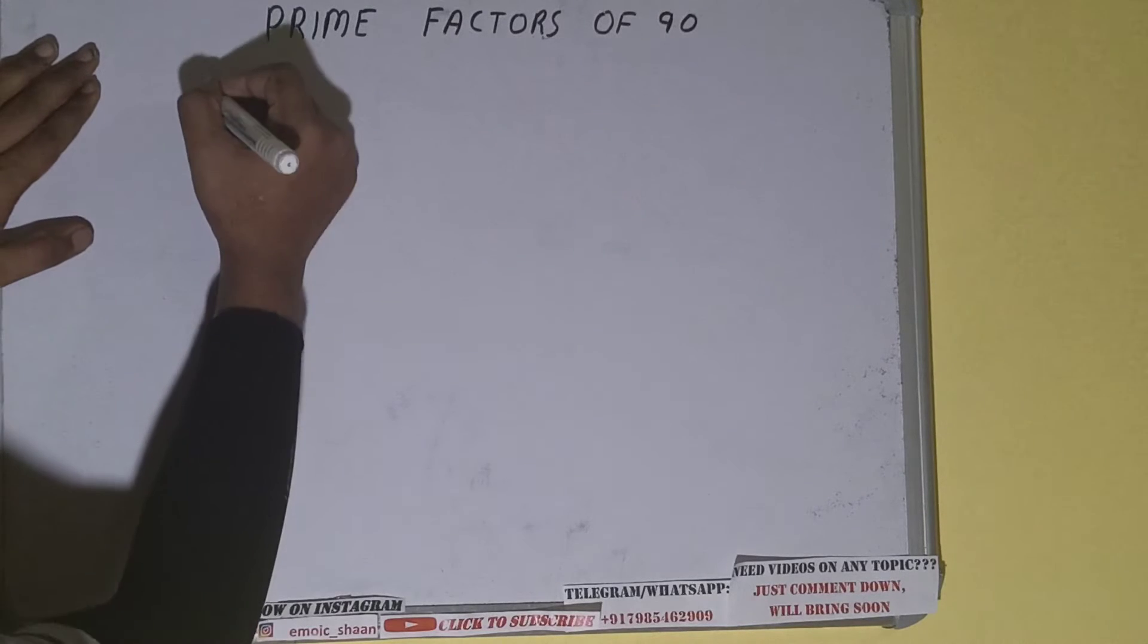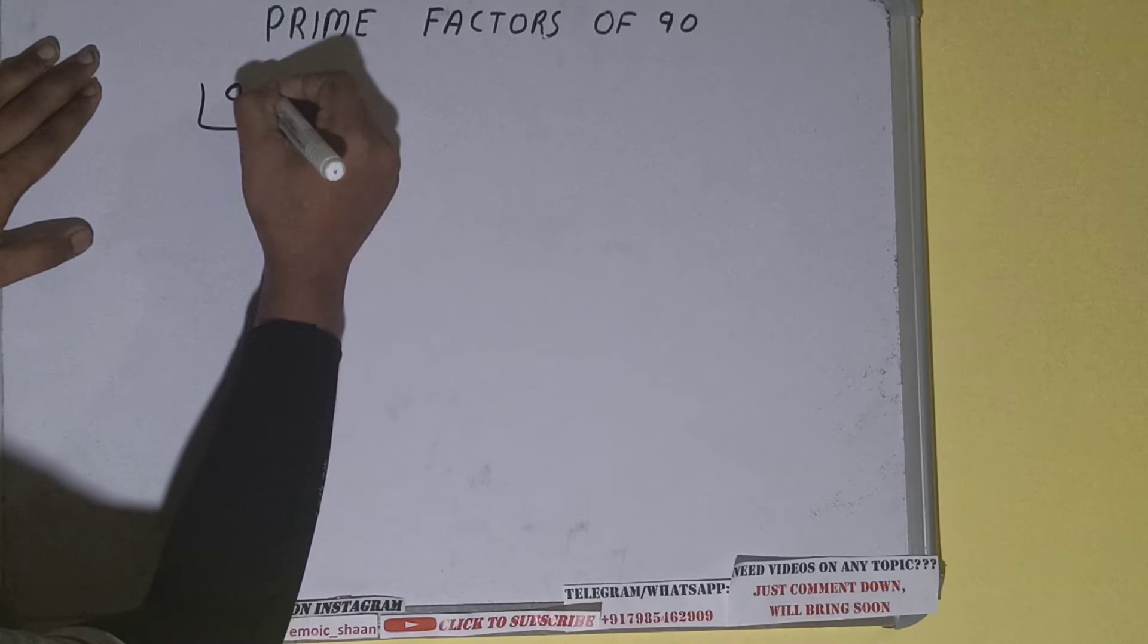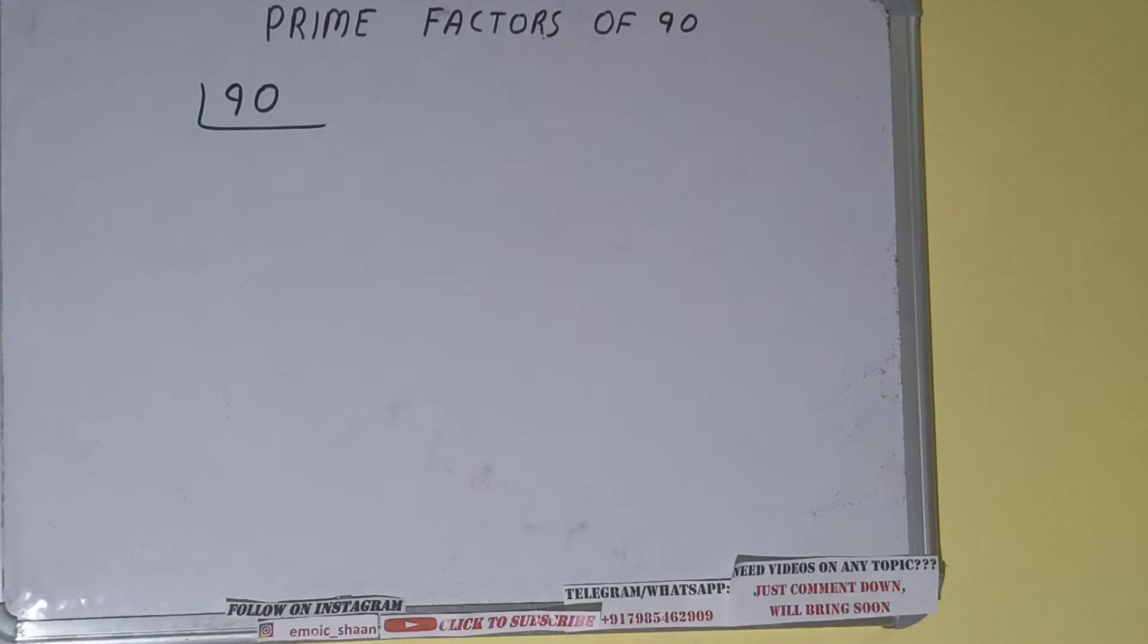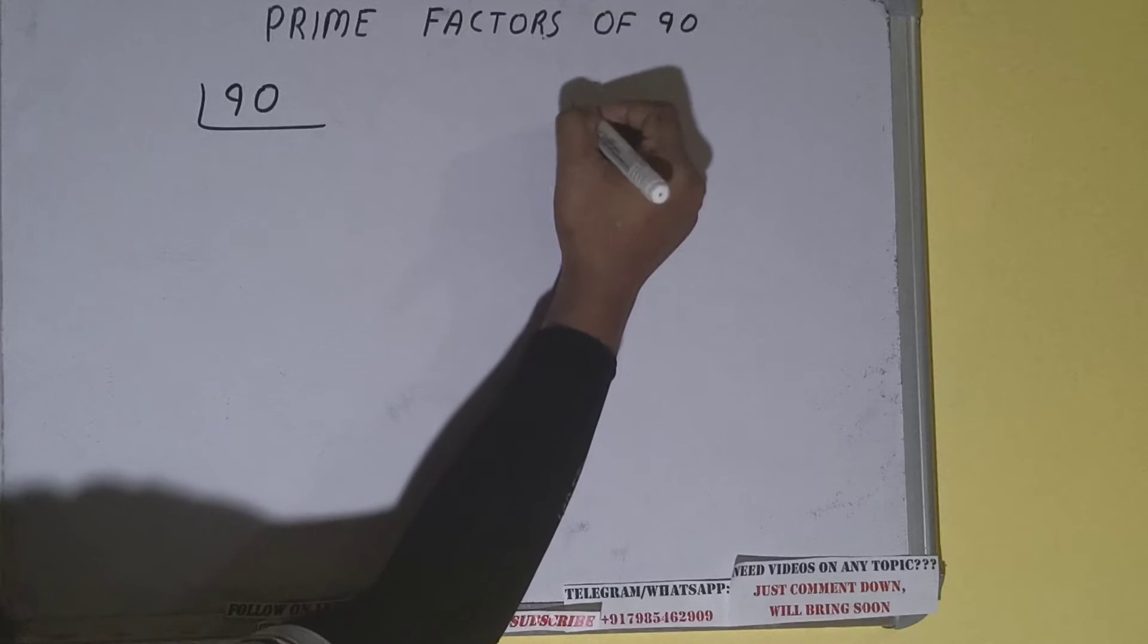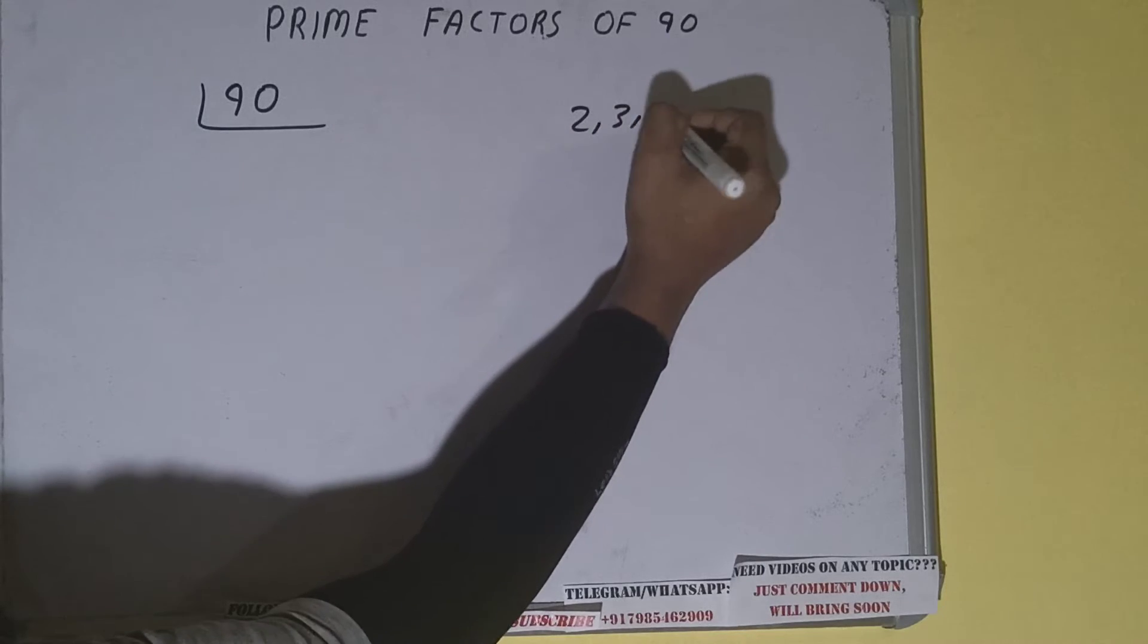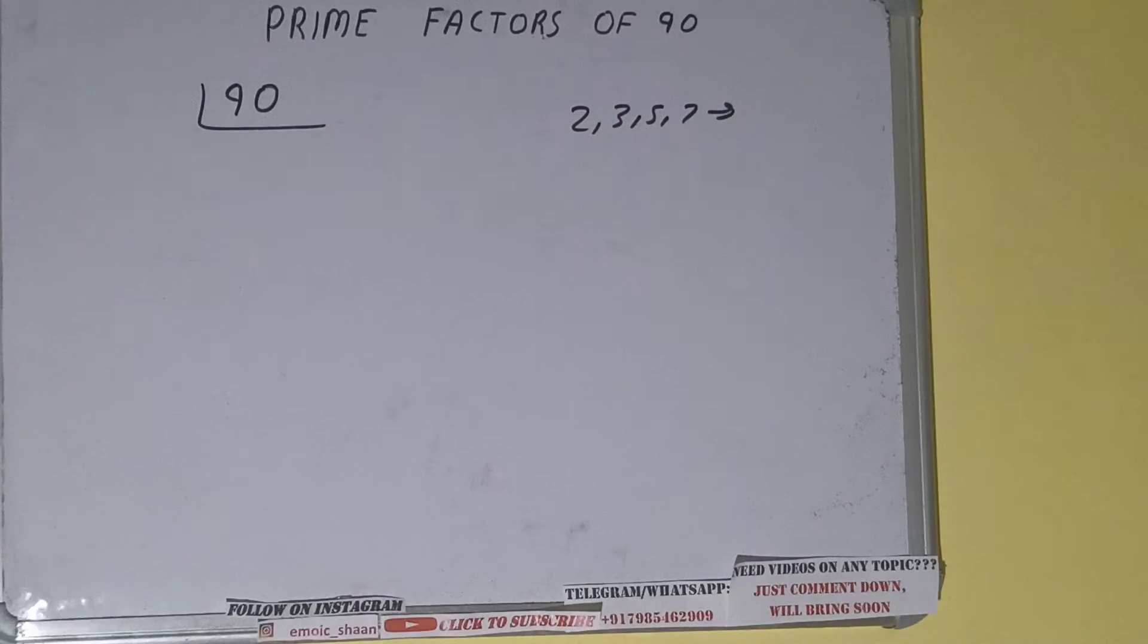First of all, we need to write the number like this. The next thing we need to know about is what are prime numbers. Prime numbers are numbers that are divisible by one and the number itself, like two, three, five, seven, and so on. All right, so we'll be starting with the lowest prime number we have.